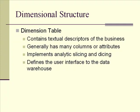Dimension tables, on the other hand, don't typically contain numbers or measures, but rather they contain the descriptors of the measures — how is the business interested in analyzing that information? There are generally many columns in a dimensional structure, and typically not as many rows as in the fact table. Businesses are interested in analyzing sales by customer, by store, and by fiscal year. So the dimension is what helps us implement the analytic slicing and dicing, and to some extent it defines what the end user sees — the end user interface for the data warehouse.